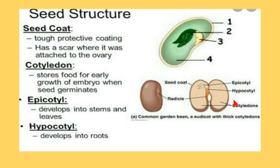Seed structure: a seed consists of a seed coat, which is a tough protecting covering. You can see here the external structure of a bean seed. It has a scar called the hilum — it is the point where the seed is attached to the ovary where it was actually attached.